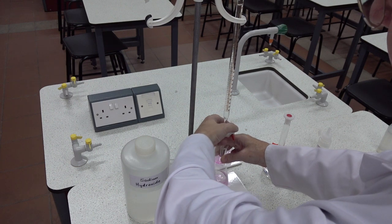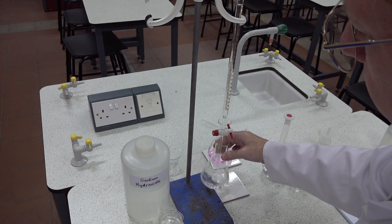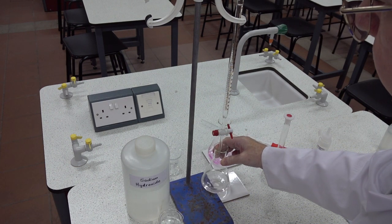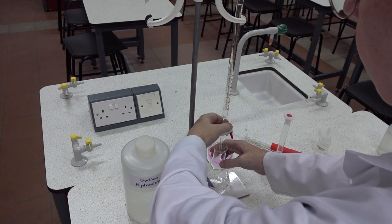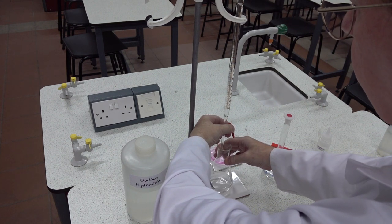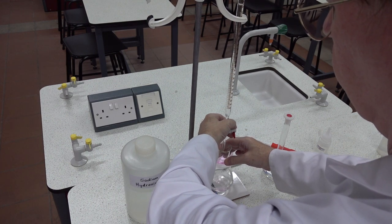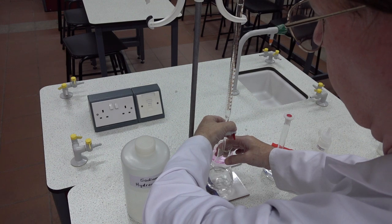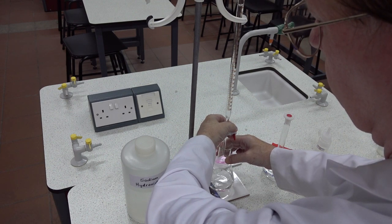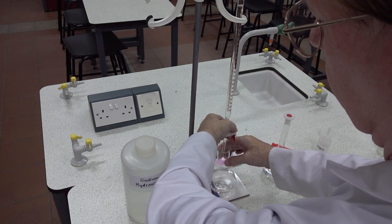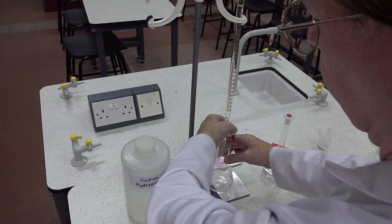So there we have 25.4, and with swirling we see the color disappears. We need to titrate until we get a persistent pink color that lasts for at least 30 seconds, so we can now add drop wise, swirling between drops.